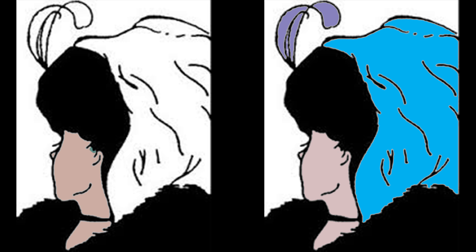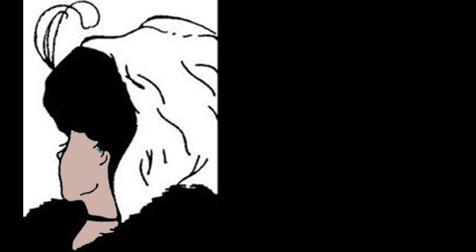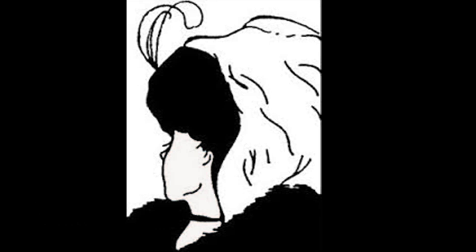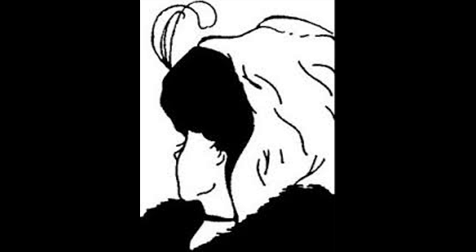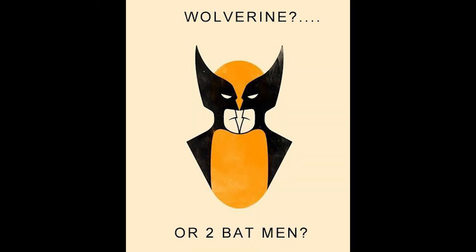The older woman's face is much larger than the young woman's face, and since there isn't typically huge variability in how large someone's face is, there's an implied difference in proximity. As with the Necker cube, the image can flip between the two percepts on its own or you can encourage it by focusing on different parts of the image. Last one is a fun example — wolverine or batman times two: you can see wolverine staring straight at you, or you can see two batmen facing each other against a yellow backdrop.